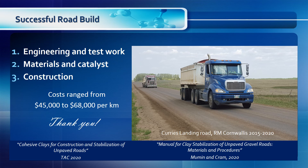In summary, there are three components to the successful stabilization of an existing gravel road: a moderate amount of engineering and test work, the correct materials and catalyst, and the proper construction protocols. In the Brandon area, the cost to stabilize roads varied from about 45,000 to 68,000 Canadian dollars per kilometer. For further details, you can refer to the TAC paper attached to this presentation, 'Cohesive Clays for Construction and Stabilization of Unpaved Roads,' and the Manual for Clay Stabilization of Unpaved Gravel Roads: Materials and Procedures, available from Brandon University or Cypher Environmental.